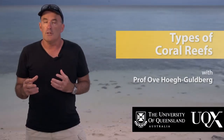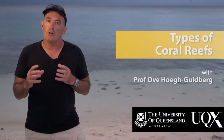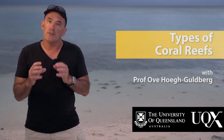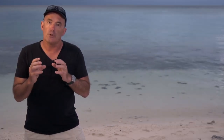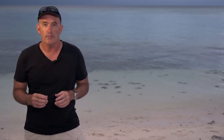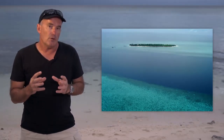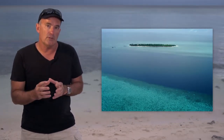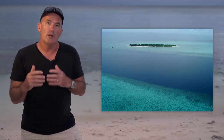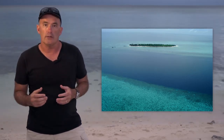Now that you've been introduced to the Scleractinian corals and their colony growth forms, I want to now consider the different forms of coral reefs that exist across the planet. Assemblages of corals occur in the deepest oceans as well as the warm, sunlit waters of the tropics like here on Heron Island.